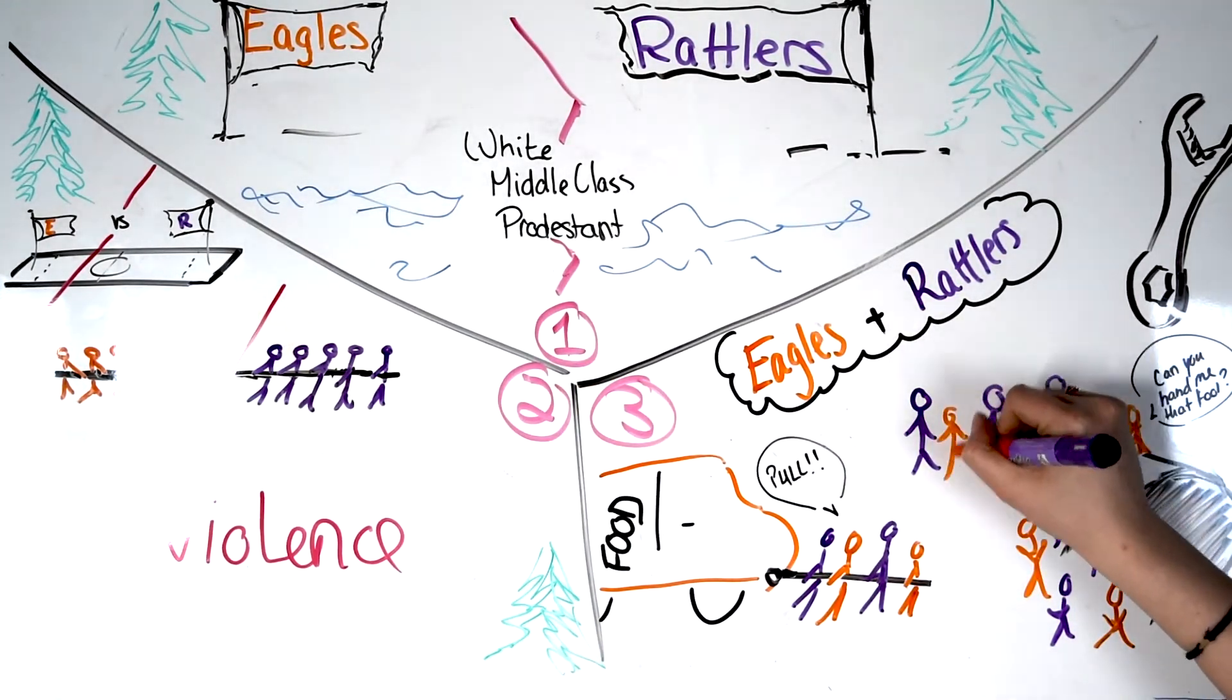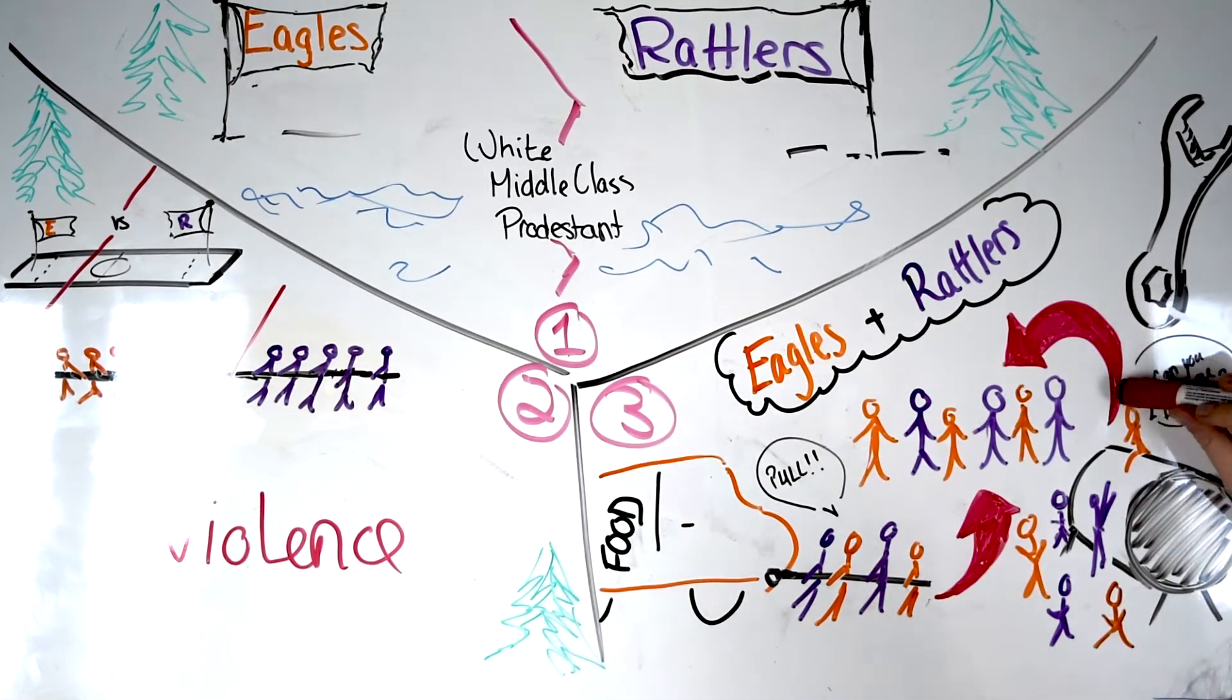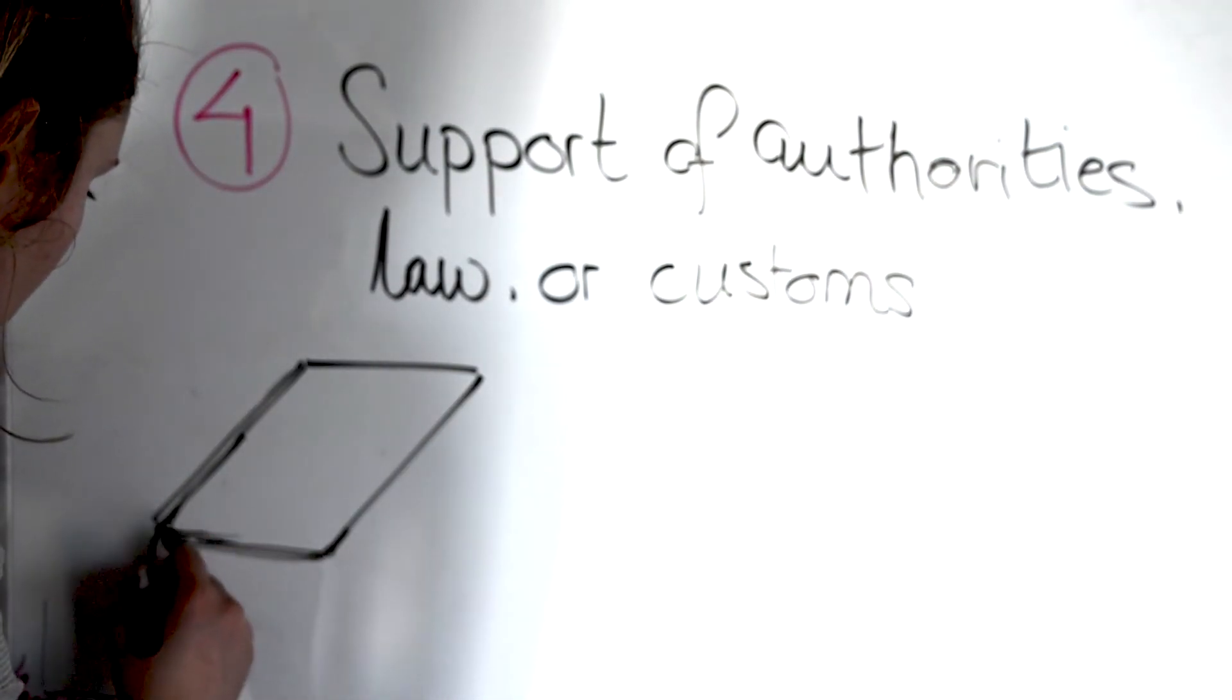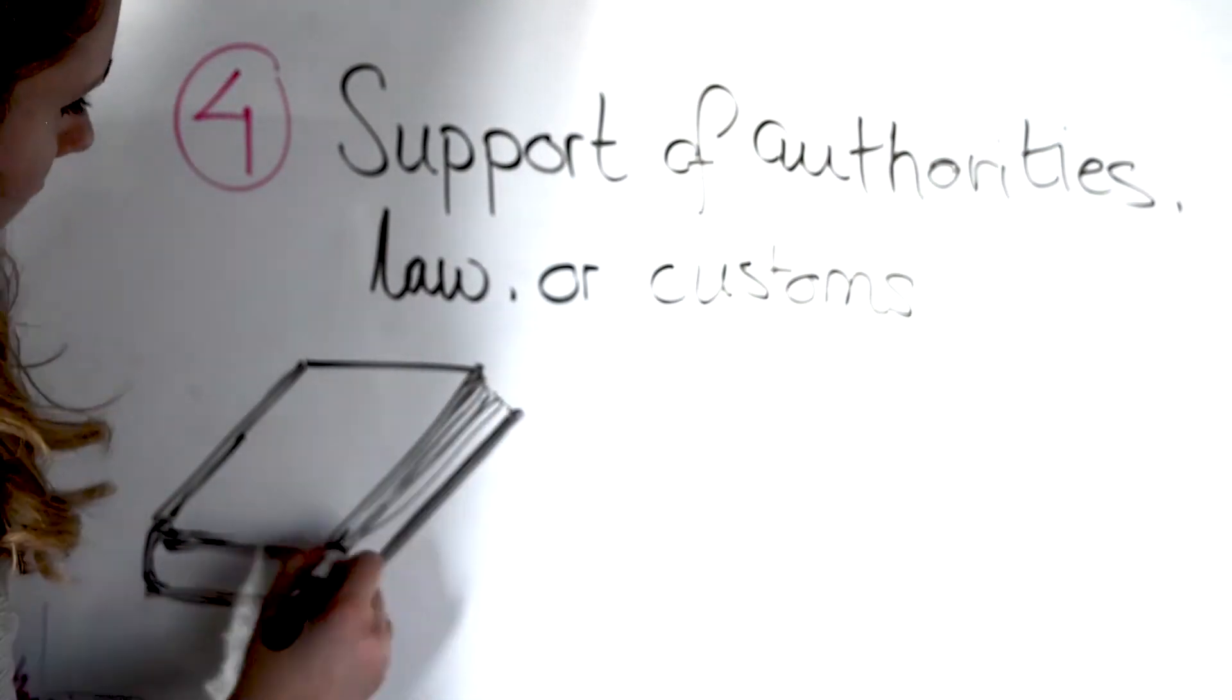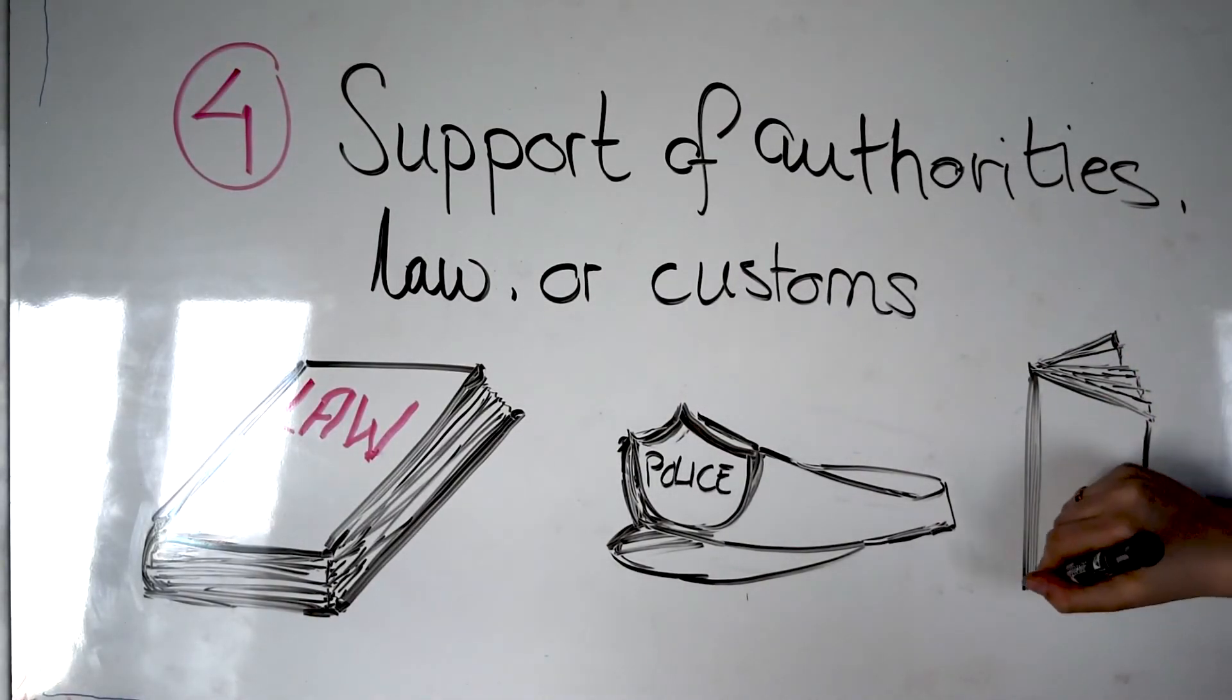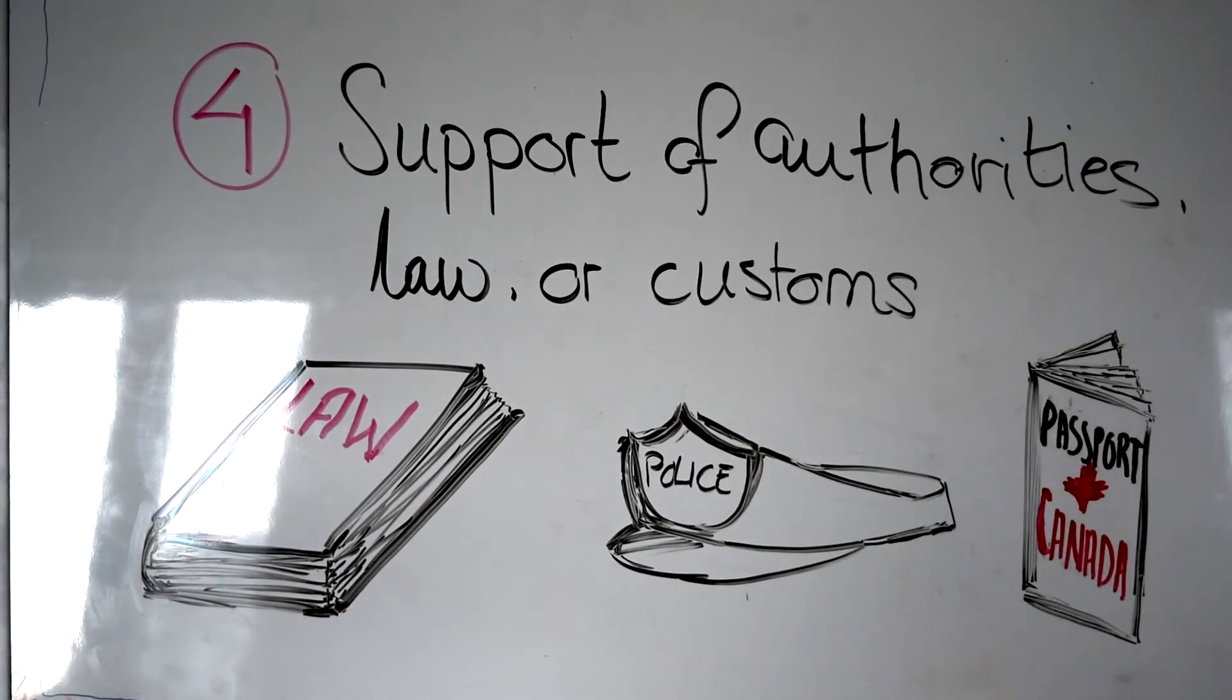this cooperation fostered positive interactions between groups. Allport's fourth contact condition was support of authorities, law, or customs. When backed by explicit support from social institutions and authorities, intergroup contact shows more positive effects. Through institutional norms of acceptance, a guiding framework for how individuals from different groups should interact can be established. Allport deemed these four conditions the supporting features of the contact hypothesis.